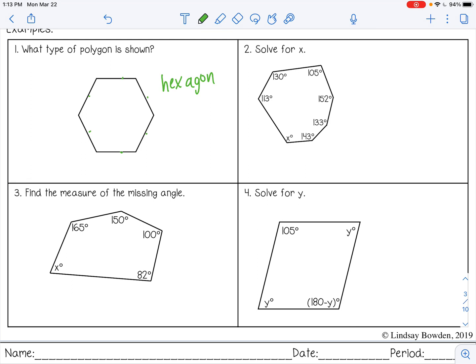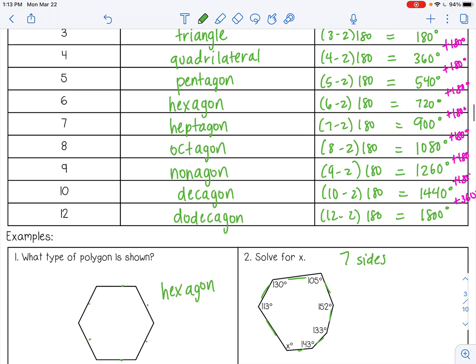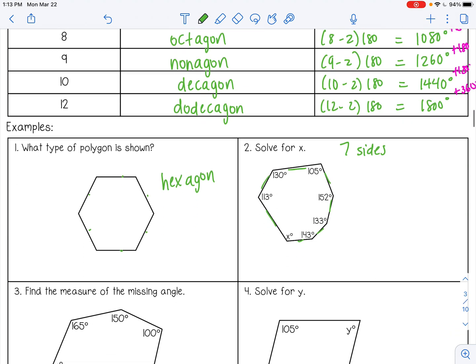Number two, solve for x. So this is where those interior angles come in. So first of all, we need to figure out how many sides. So one, two, three, four, five, six, seven. I'm going to scroll back up to my chart here. This is a heptagon. It's going to have 900 degrees inside. So that means that all of those angles should add up to 900.